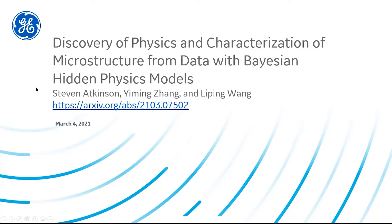My name is Steven Atkinson. I'm at GE Research. This is some work that my teammates Yiming Zhang and Li Ping Wang helped out with. The topic today is basically an application centered around microstructure inverse problems using this technique that we've been using a lot called Bayesian hidden physics models.